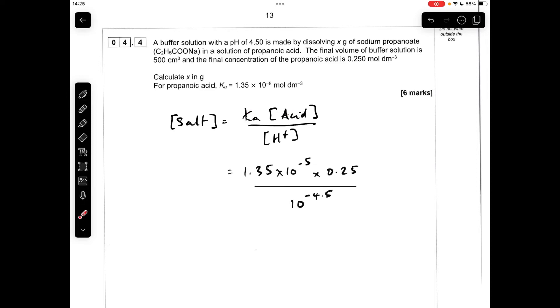Both the Ka and the acid concentration were given in the question. So there's Ka, there's the acid concentration. The H+ concentration wasn't given, so to get H+ concentration from pH, it's 10 to the minus pH.